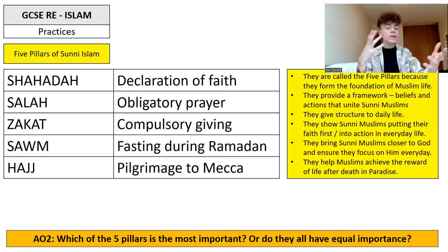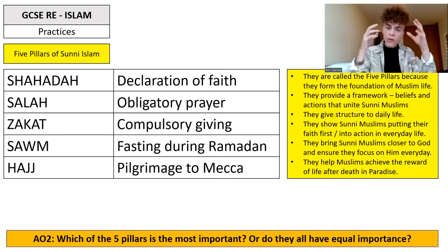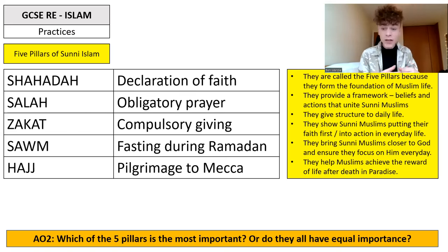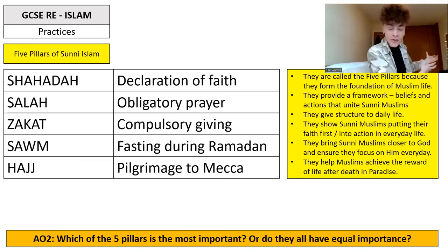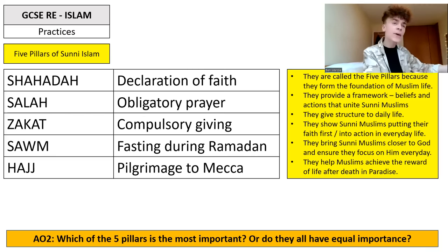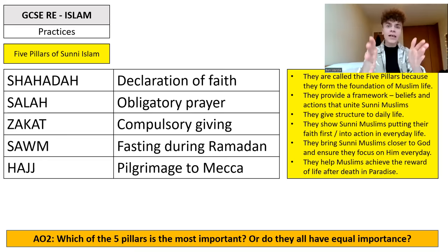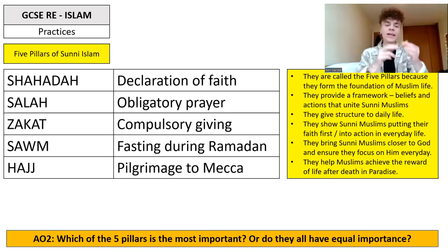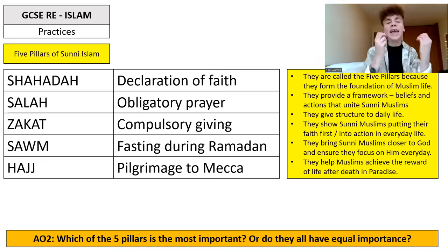They give a clear understanding of what being a Sunni Muslim involves, outlining these five essential things you need to be practising. They give structure to daily life — for example, Salah five times a day gives a real rhythm to your day. They show Sunni Muslims putting their faith first, putting their faith into action in everyday life. Religion isn't just something you believe in — it has an impact on the things you do in this world, and these five pillars show you prioritising your faith today, putting those beliefs into action.